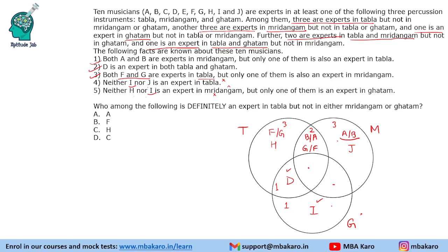We now need to place two more people. C and E are remaining to be filled. We have placed two out of the three values in each group, so one value remains in each. No more information is provided, so it has to be C and E — one of them will be expert only in tabla, and one of them expert in only mridangam.